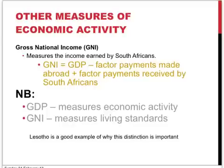There are also other ways to measure economic activity. One is to consider the gross national income (GNI). This basically means looking at GDP, but also including the incomes earned by South Africans abroad and the factor payments made to factors of production from outside of South Africa. The gross national income is the GDP minus the factor payments made abroad, plus the factor payments received by South Africans. The GDP measures economic activity; GNI measures living standards. Lesotho is a good example — a lot of people from Lesotho work in the South African economy, and factor payments to them should be added to Lesotho's GDP to get their GNI, which is much larger than just the GDP.